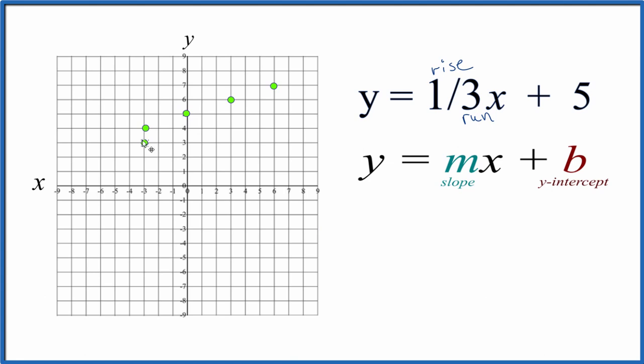Those points would be on our line as well. Let's put a line through that. And we put arrows to show that this goes to infinity here. And that's the graph for y equals 1/3x plus 5.